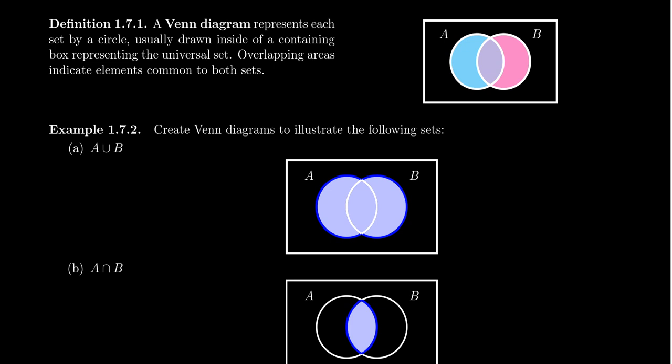And this isn't always the case, but sometimes people will draw a box or a rectangle around the circles. This would represent the universal set that the sets live inside of. So let's look at a few illustrations of Venn diagrams.